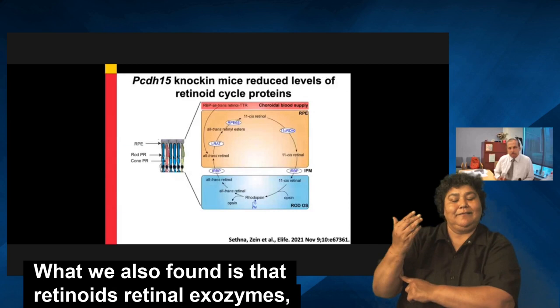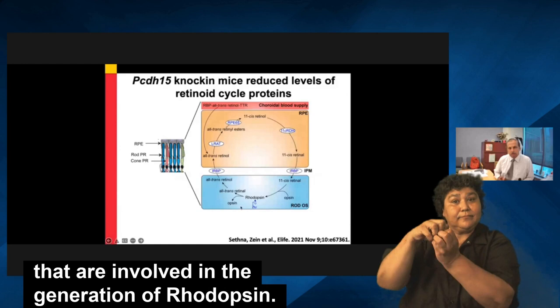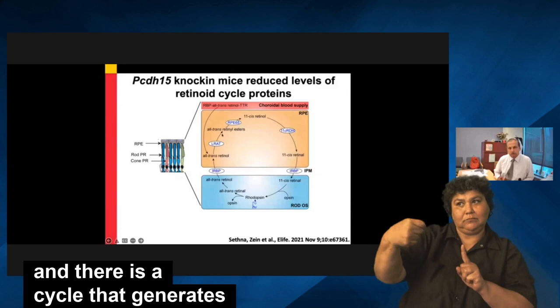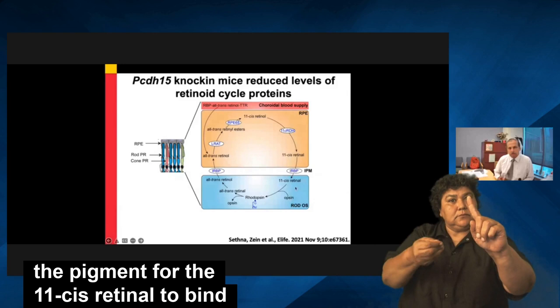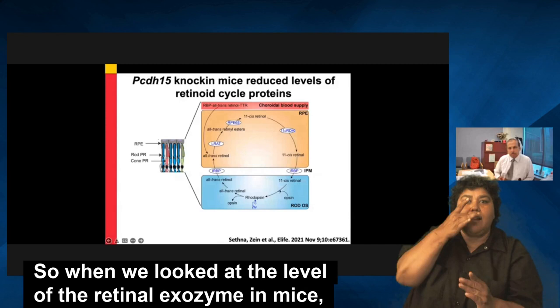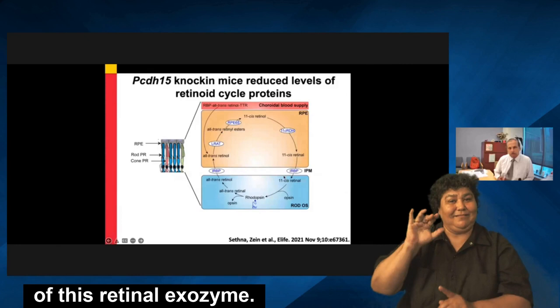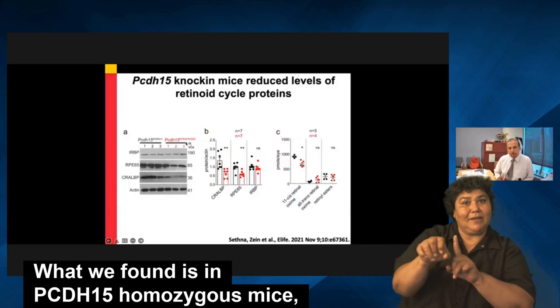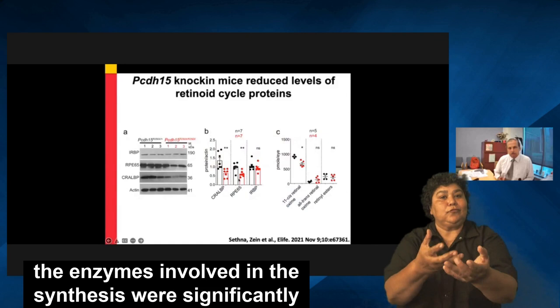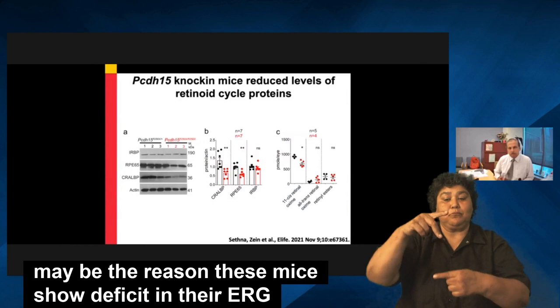We also found that retinoids and retinoid enzymes — molecules involved in the generation of rhodopsin — are reduced in these mice. These molecules cycle between photoreceptors and the RPE to generate 11-cis retinal, which binds with opsin to generate rhodopsin, which then signals in response to light. When we looked at the levels of retinoid enzymes including RPE65 and IRBP in PCDH15 homozygous mice compared to heterozygous mice, both the enzymes involved in retinoid synthesis and the retinoid species themselves were significantly reduced — which may explain the ERG amplitude deficits.